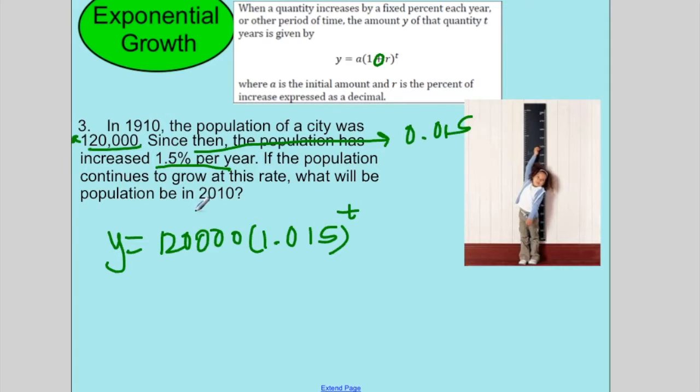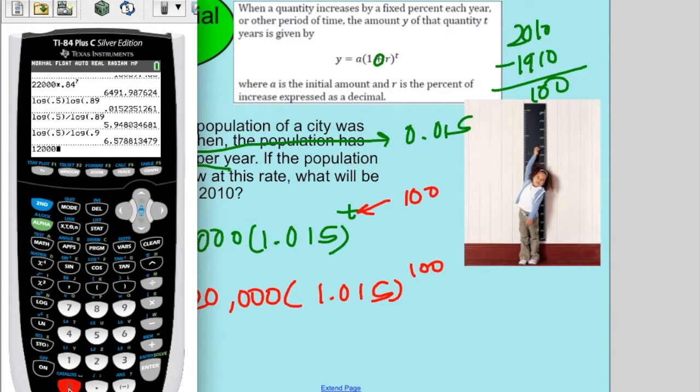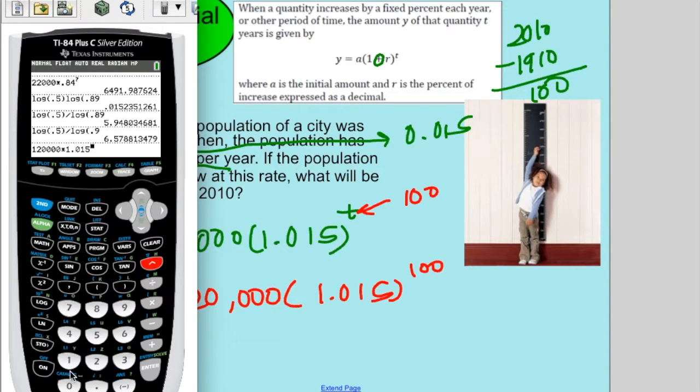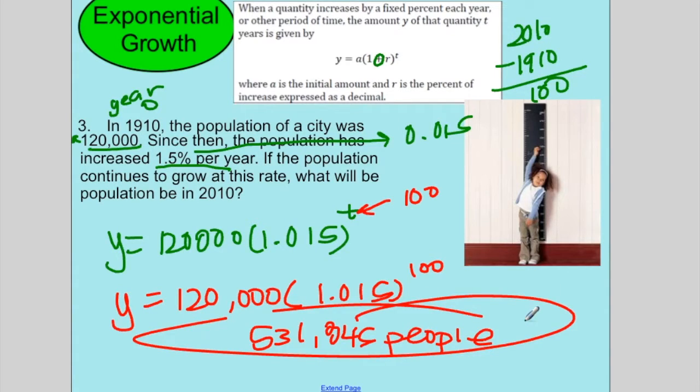Now, we are given time. So t is usually the number of years later. How many years has it been from our starting point, which is like year 0, to 2010? This one is pretty easy, but if you don't know, you can take 2010 minus 1910, which is 100. So that means our time is 100. So you just go ahead and plug it in. If I do that and I type it in, I have 120,000 times 1.015 to the 100. Now, this one is talking about population. So should you have any decimals? No. Just follow rules of rounding. This is a 4, which tells us to round down. So it would be 531,845. So that's how big the city would be.